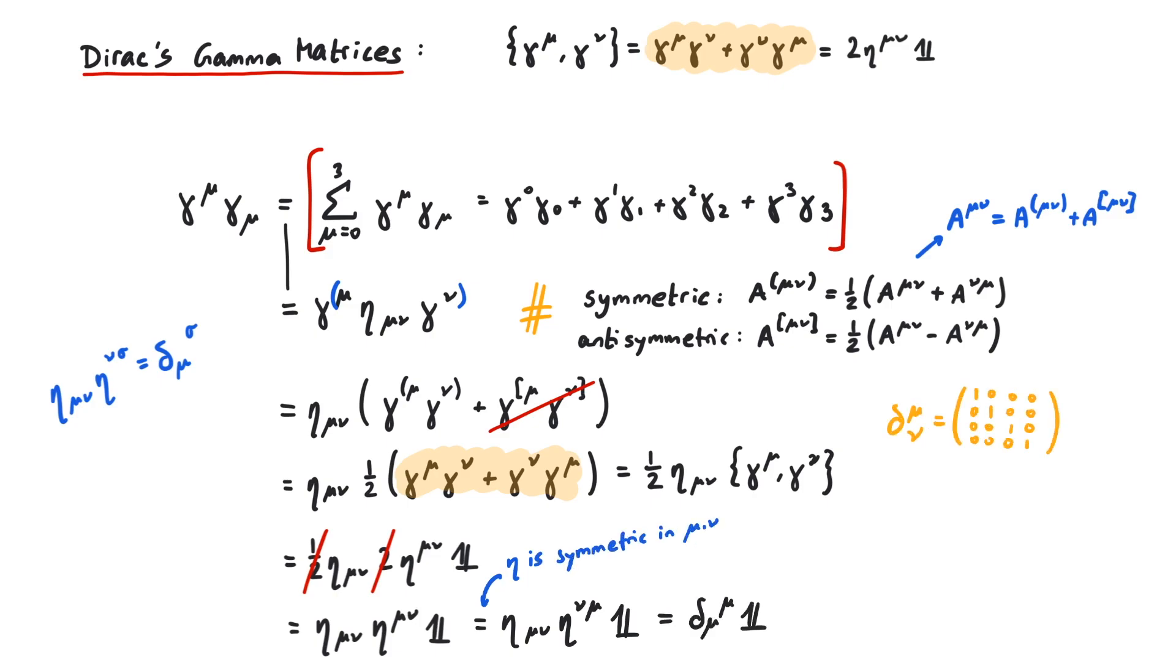In other words, this is delta 1 1 plus delta 2 2 and so on, which yields 4. So the result of gamma mu gamma mu is 4 times the identity matrix.